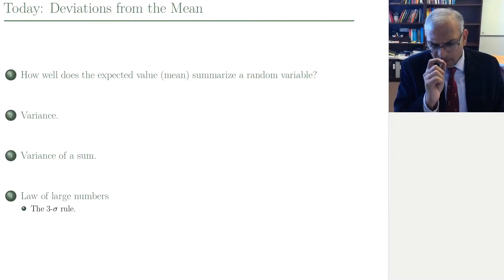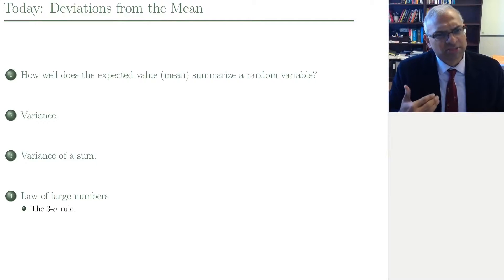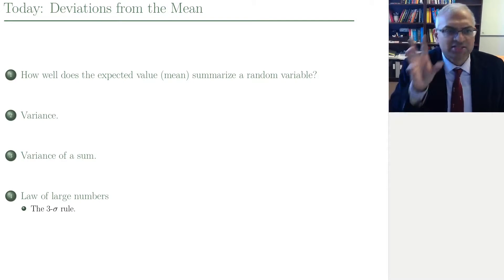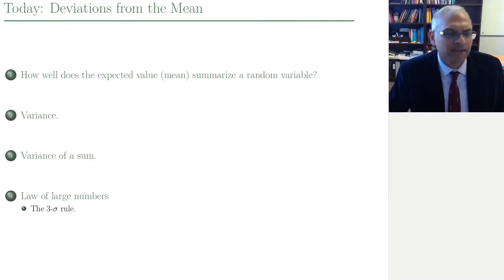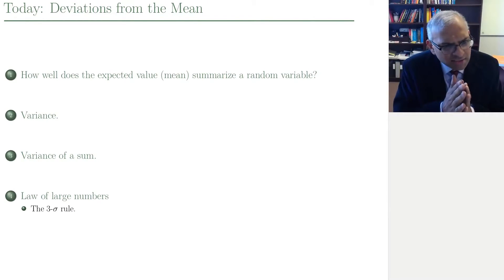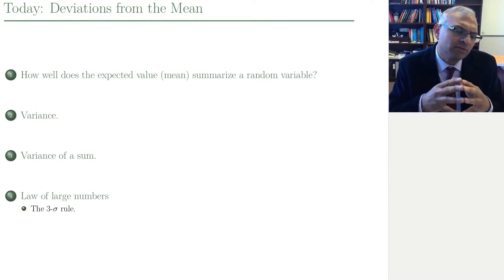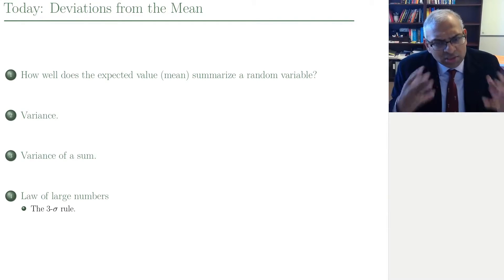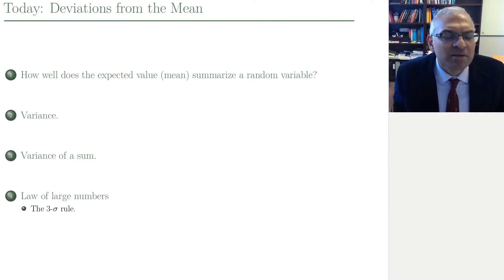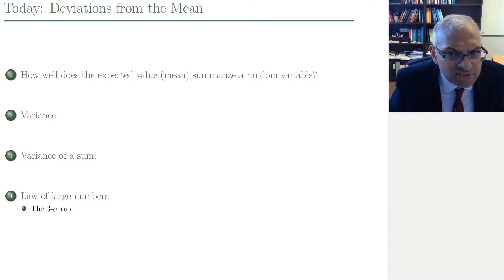What are we going to talk about today? The main goal is to discuss the quality of the expected value — sometimes called the mean. How well does the mean summarize the experiment, summarize the random variable? We're going to introduce the variance, and then use this variance to develop what's called the three sigma rule. Basically, the variance is sigma squared, and we're going to show that whenever you run the experiment, what you observe — the random variable — will be roughly 90% of the time within three sigma of the expected value, within three sigma of the mean.